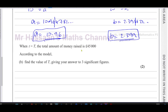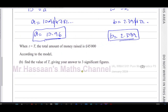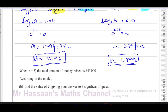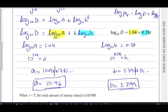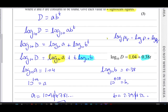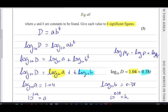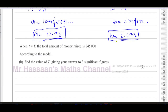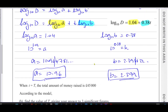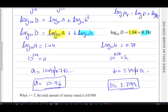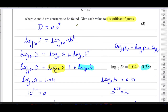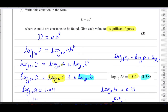Part (b): when t equals capital T, the total amount of money raised is £45,000. According to the model, find the value of T, giving your answer to three significant figures. We could use d = a·bᵗ, but it's probably easier to use the logarithmic form directly, since we'd need logarithms anyway to isolate t.